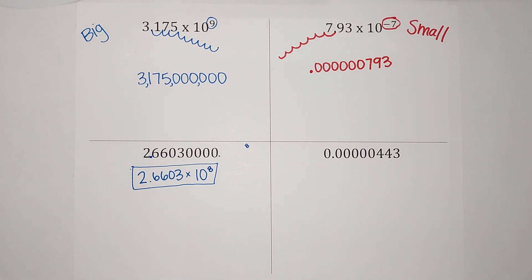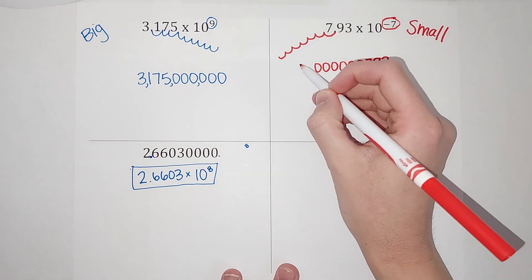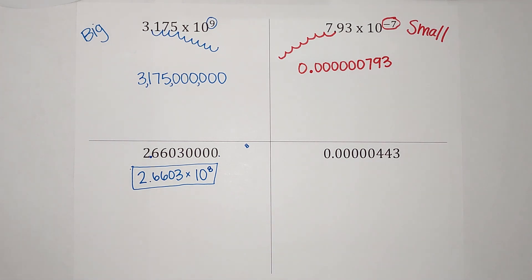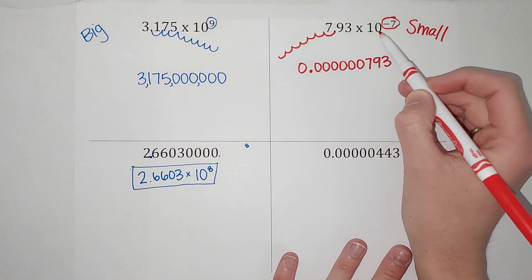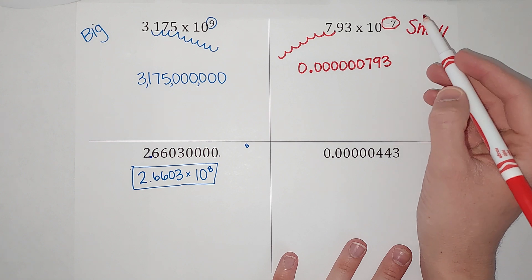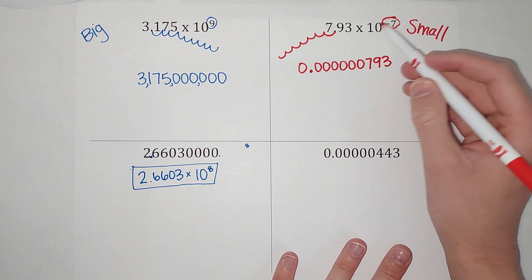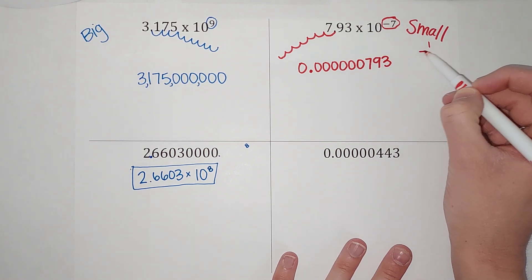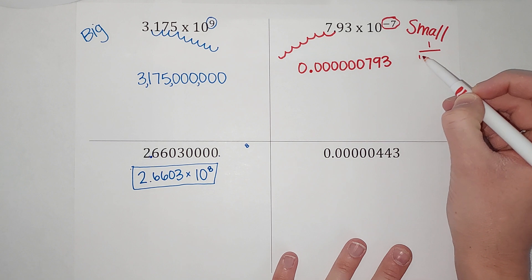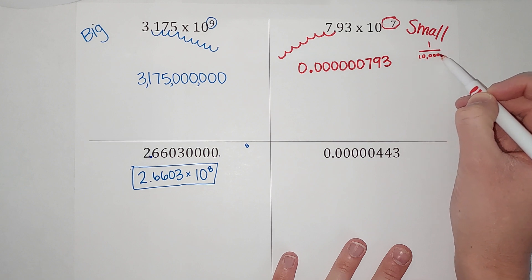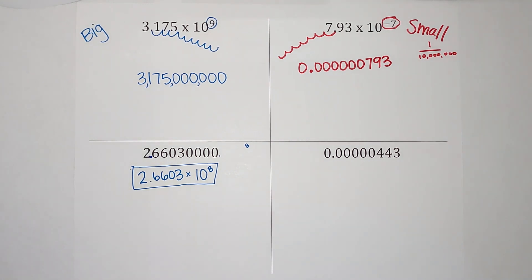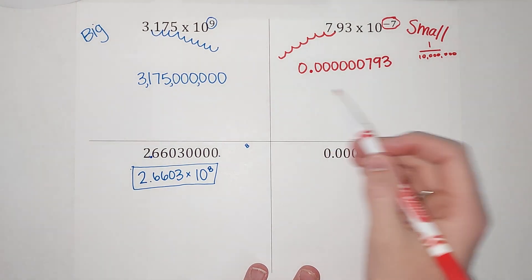A lot of times, just to help us see it better, we like to stick a zero in front of the decimal. So that is my really small number. What we did here: 10 to the negative seven power is like multiplying by one over 10 million. That is my number in standard notation.